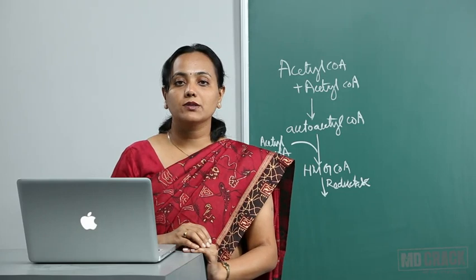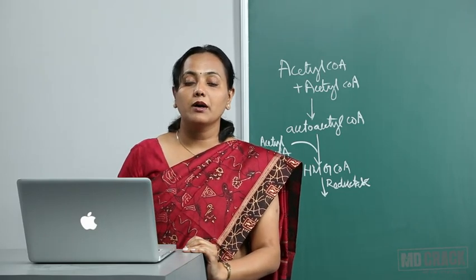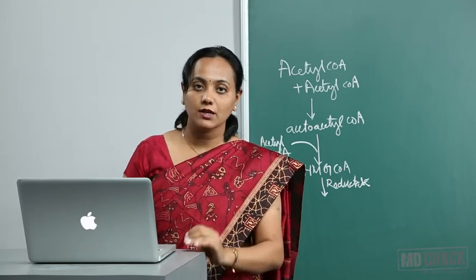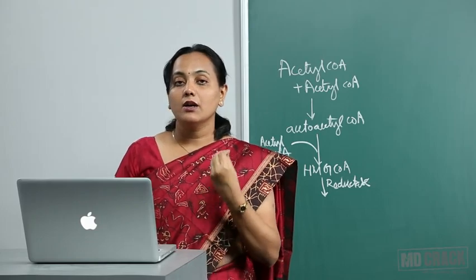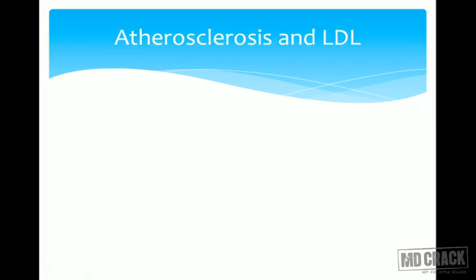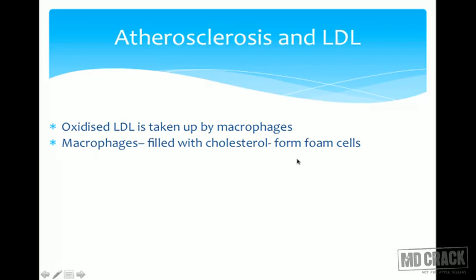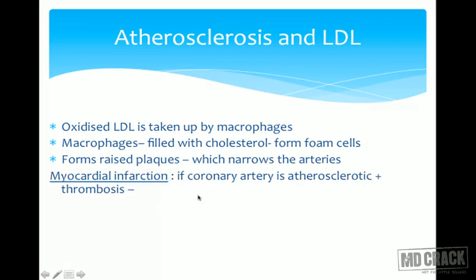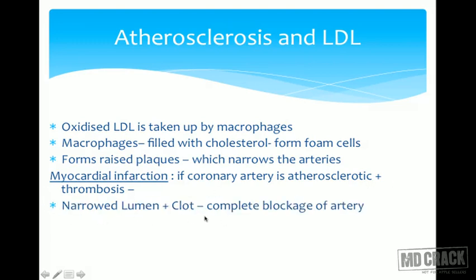Now I'll briefly discuss atherosclerosis and myocardial infarction from a biochemical perspective. Atherosclerosis is hardening of arteries due to deposition of cholesterol and other lipids in arterial walls, forming plaques and narrowing arteries. Oxidized LDL is taken up by macrophages; macrophages filled with cholesterol form foam cells and raised plaques which narrow the artery. Myocardial infarction occurs when a coronary artery has atherosclerosis plus thrombosis, leading to complete blockage and infarction.